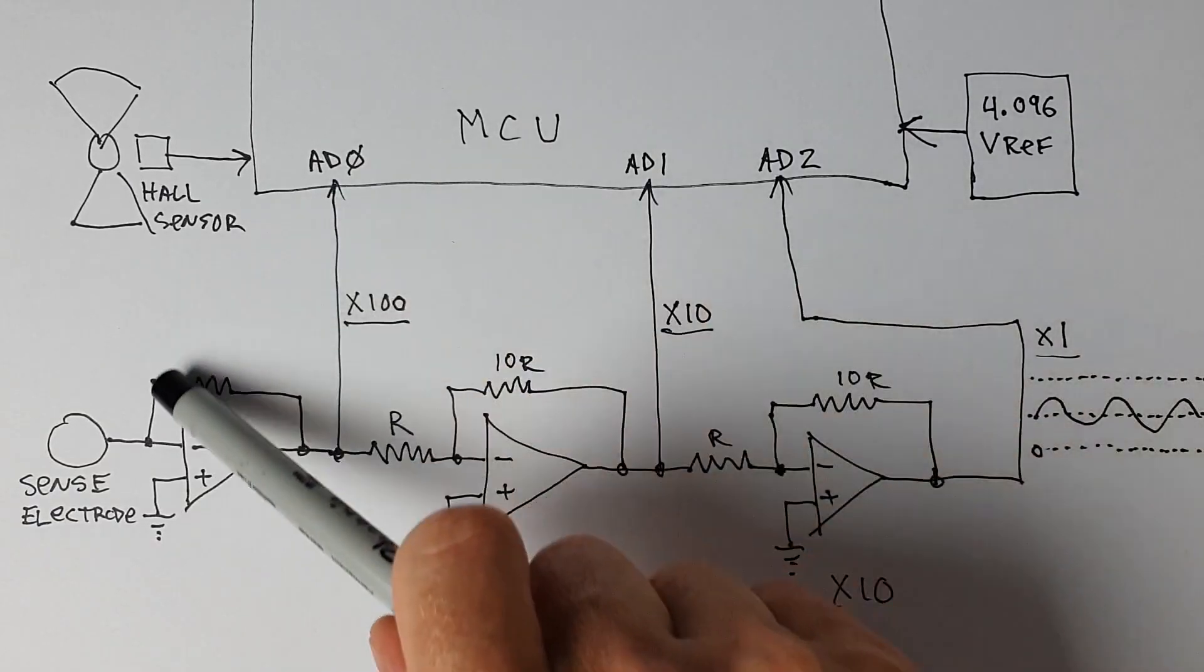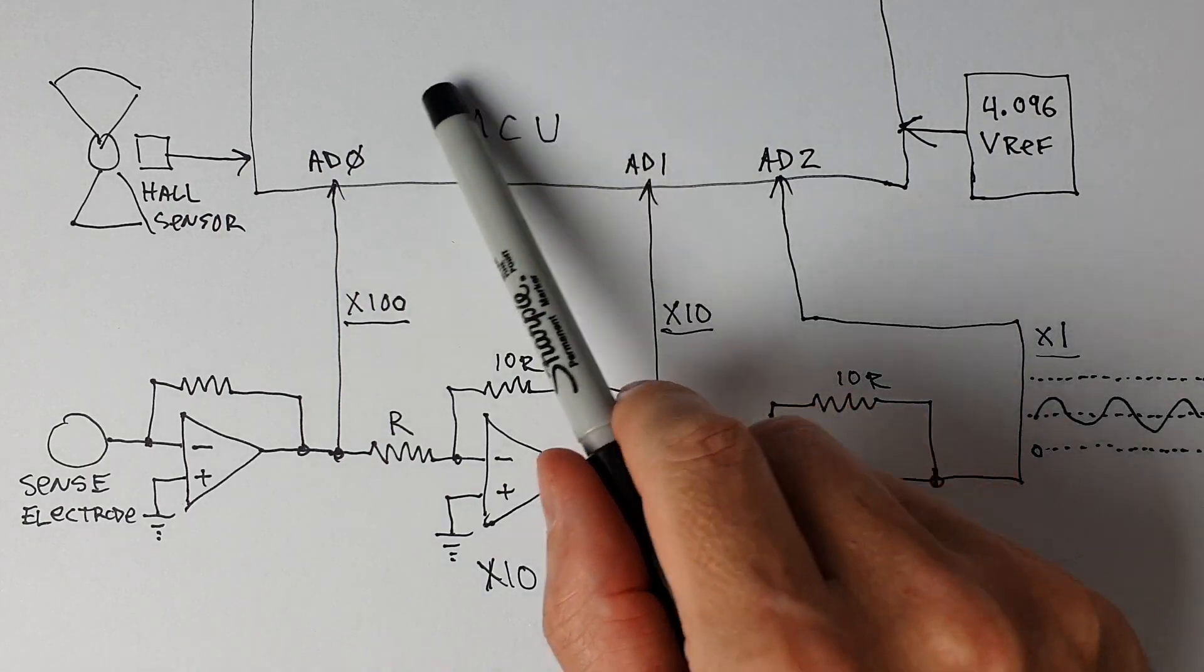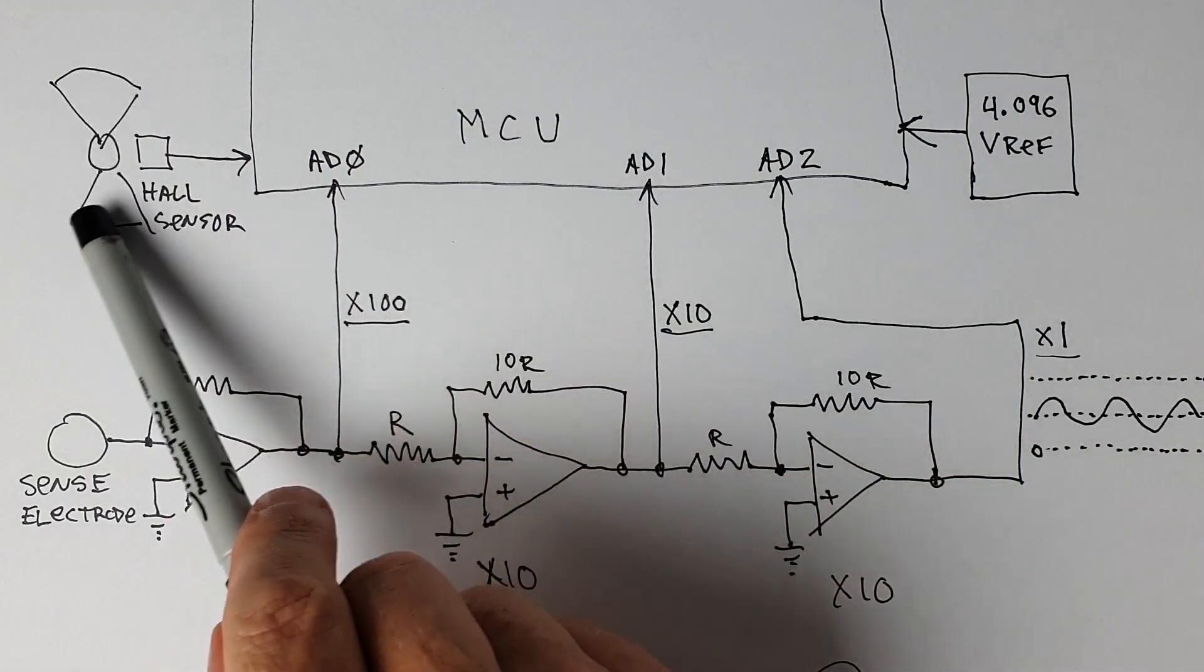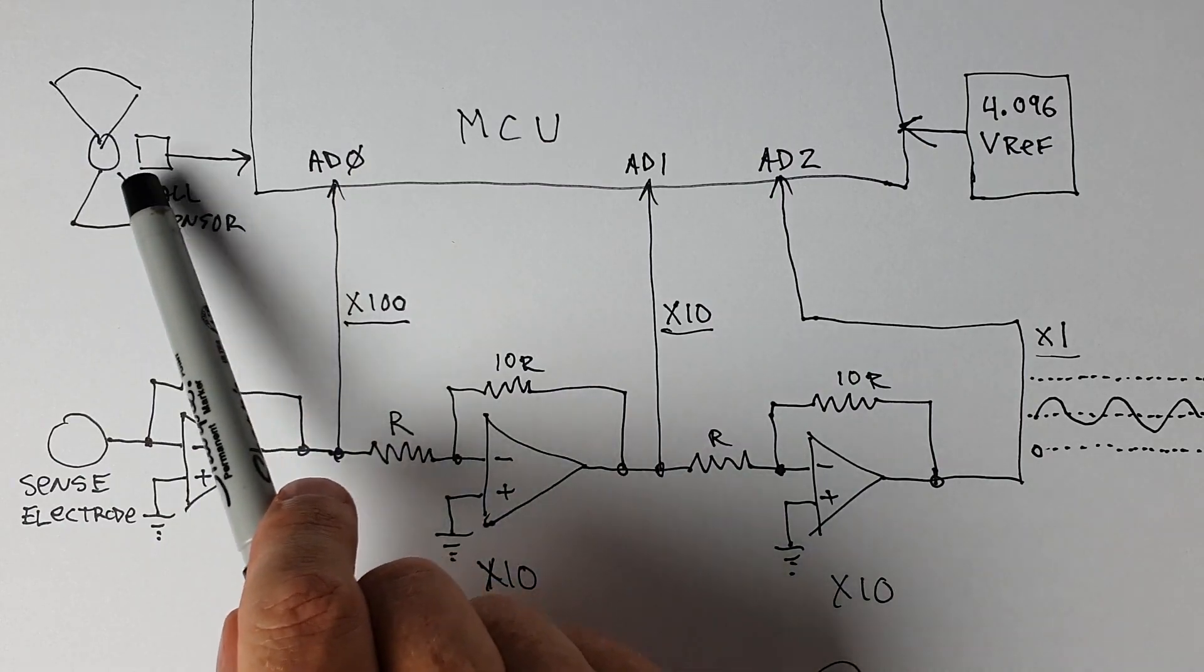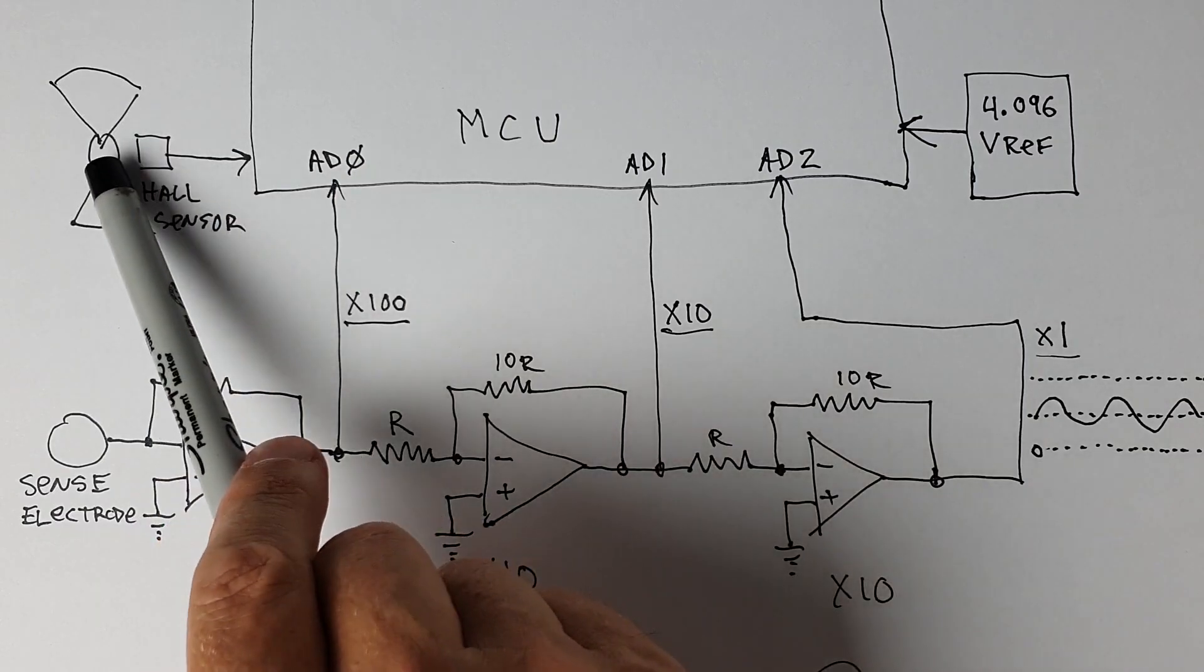Let's look at the signal chain for this device. Here we have the microcontroller. We have our rotating shutter, our Hall sensor, which feeds pulses in to create the timing signals.